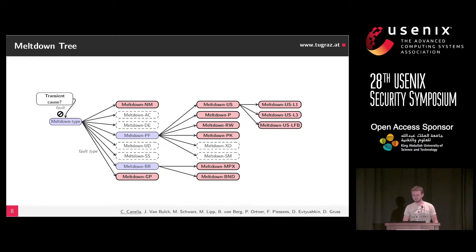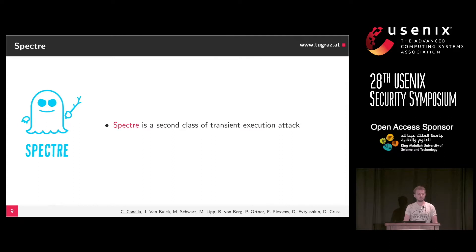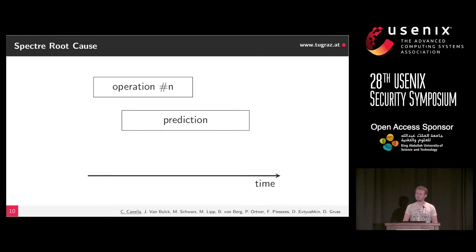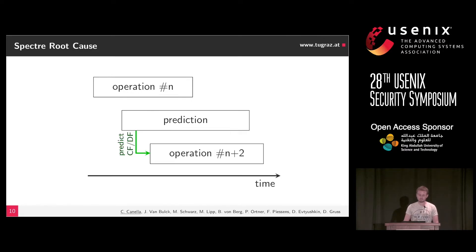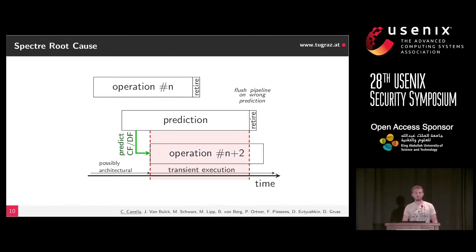Meltdown is not the only instance of transient execution attacks — there's also Spectre. With Spectre, we don't exploit faults but instead data or control flow predictions. We have an instruction that tries to predict based on what the CPU has learned in the past — for example, the last five times at this branch I went in that direction, so I predict the same again. The subsequent instructions then start executing as they normally would. But at one point the CPU realizes the prediction is wrong, flushes the pipeline, and does not revert the microarchitectural state changes in the cache or TLB.